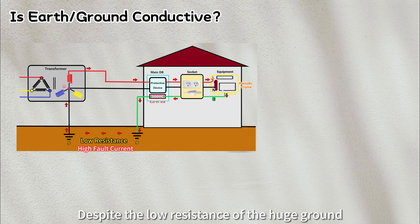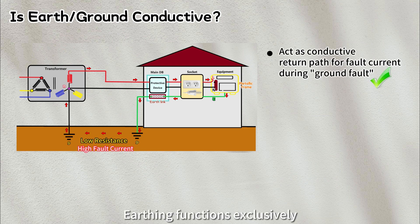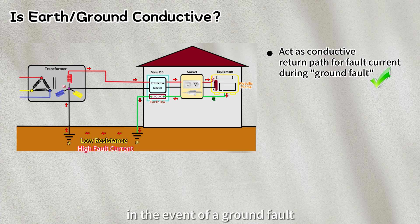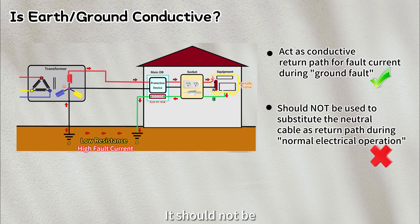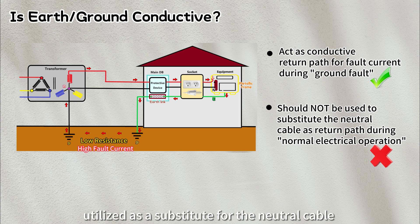Despite the low resistance of the huge ground, it's important to emphasize that earthing functions exclusively as a conductive return path in the event of a ground fault. It should not be utilized as a substitute for the neutral cable during regular electrical operations.